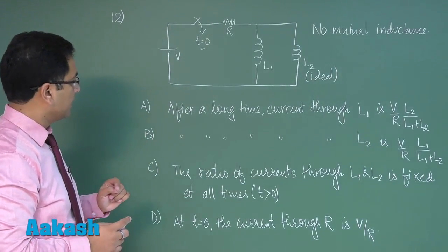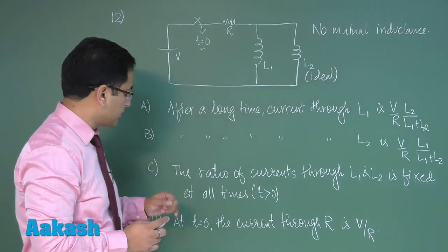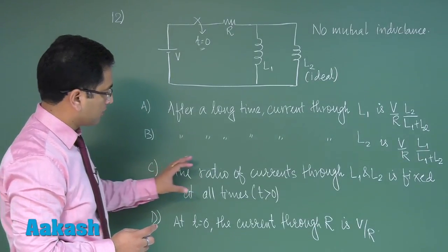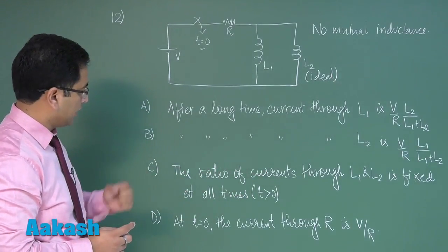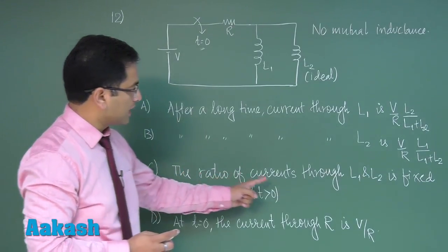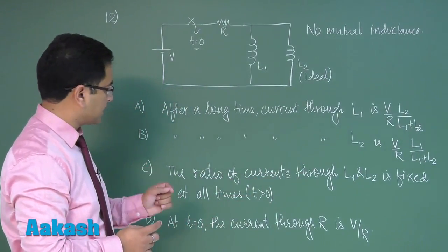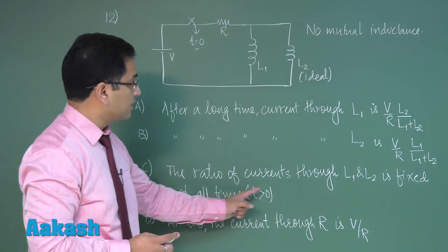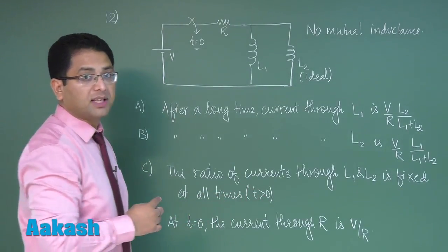In this situation I'll directly start attempting from option number C. On the basis of the given ease and the given sequence, ratio of currents through L1 and L2 is fixed at all times t greater than zero. It seems to be correct.